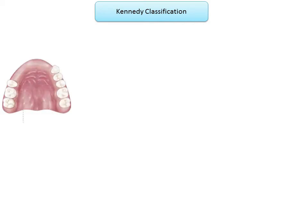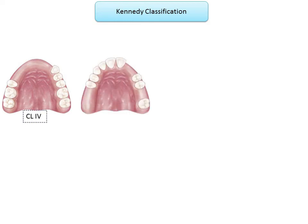Let's look at some examples to recapitulate. In the first image, anterior teeth are missing from the first premolar to the lateral incisor — a single anterior edentulous space with all teeth present posterior to it — so this is automatically Class 4. In the second image, there are three edentulous spaces; applying Rule 5, the most posterior space determines the classification as Class 2, and the two remaining edentulous spaces are added as modifications, giving Class 2 Modification 2.